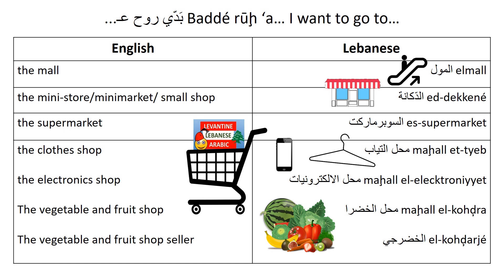'Baddi rooh ad-dukkaane' — I want to go to the little shop or mini market; 'dukkaane' is a small shop in Lebanon. 'Baddi rooh as-supermarket.' 'Baddi rooh a-mahal at-tyaab' — a clothes shop; 'mahal at-tyaab' means clothes store. 'Baddi rooh a-mahal al-iliktroniyyaat' — the electronics shop. 'Baddi rooh a-mahal al-khudra' — the fruit and vegetable shop.